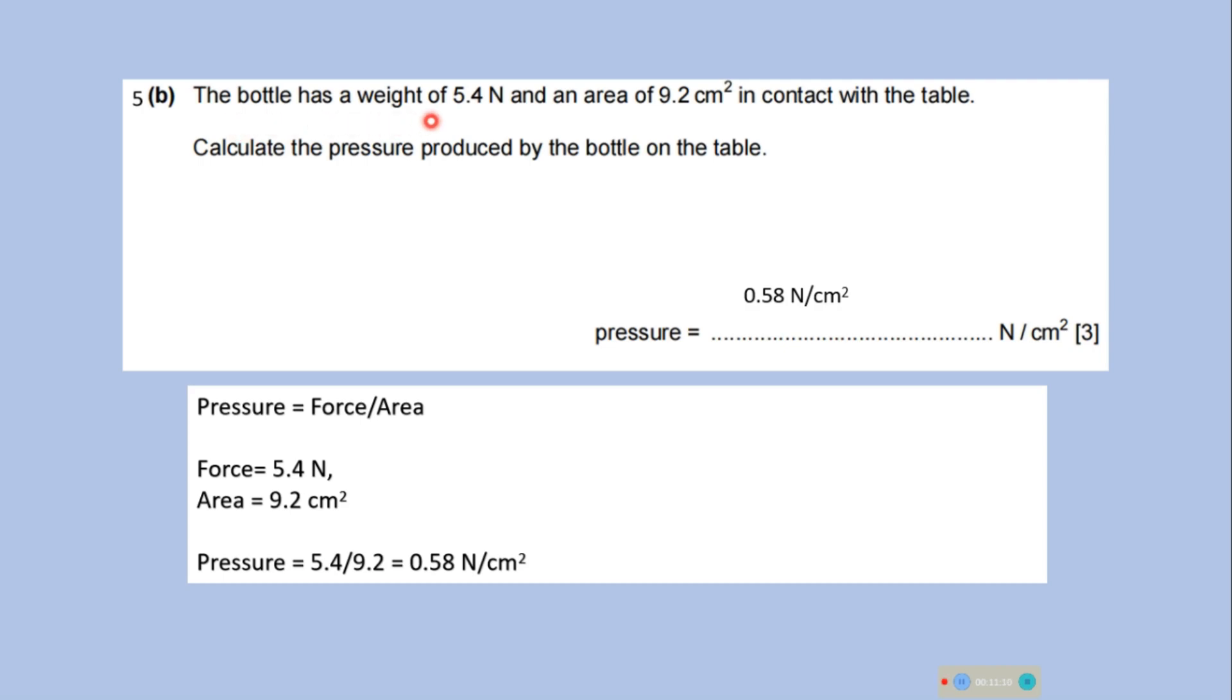The bottle has a weight of 5.4 N and an area of 9.2 cm2 in contact with the table. Calculate the pressure produced by the bottle on the table. So, pressure we know it is force per unit area. The calculation is given here. Pause the video. Check all the calculation. The answer is 0.58 N per cm2.